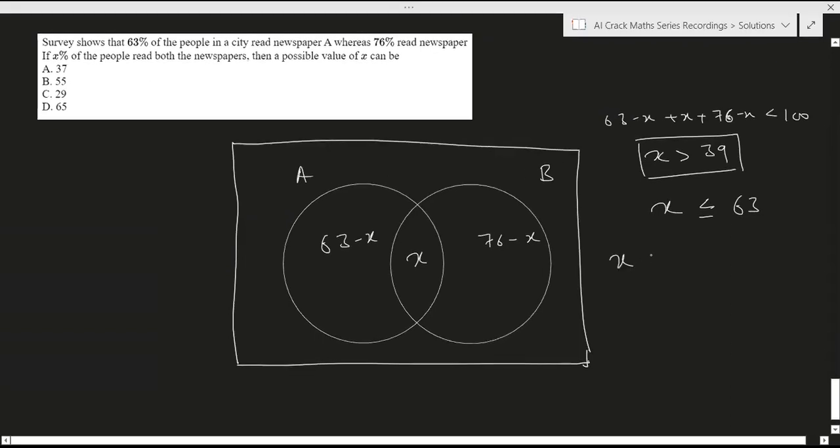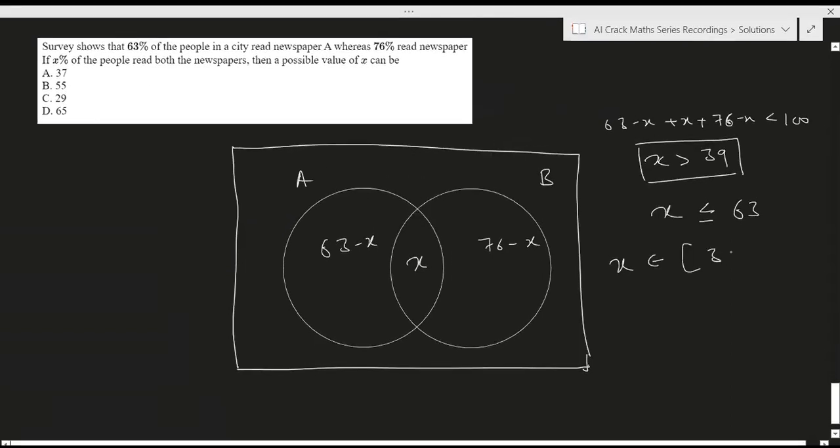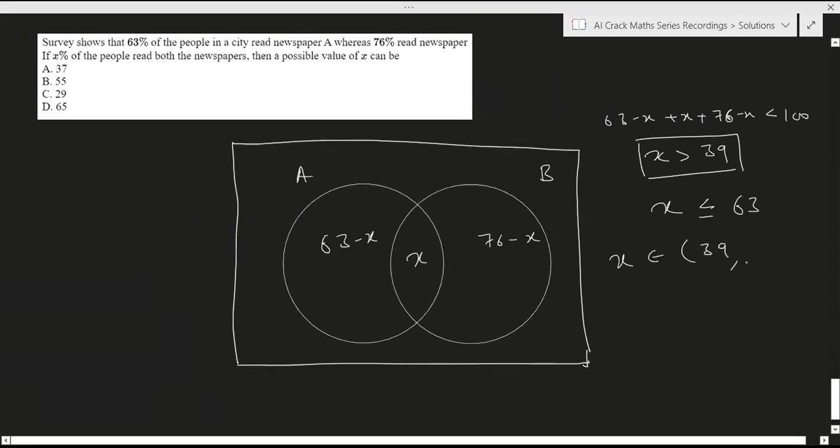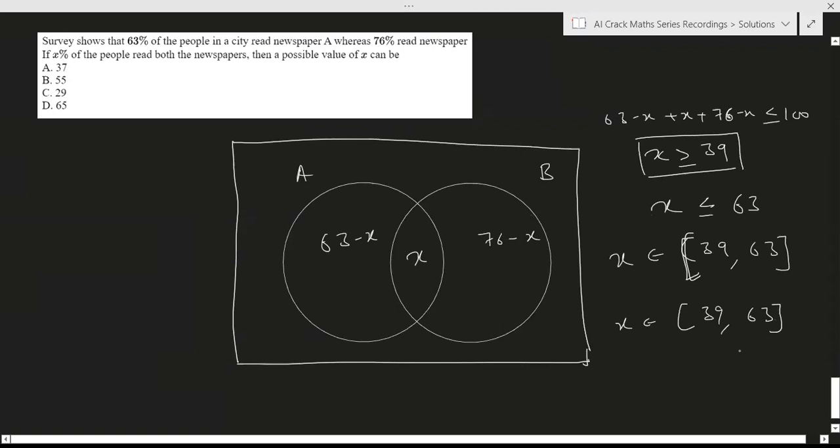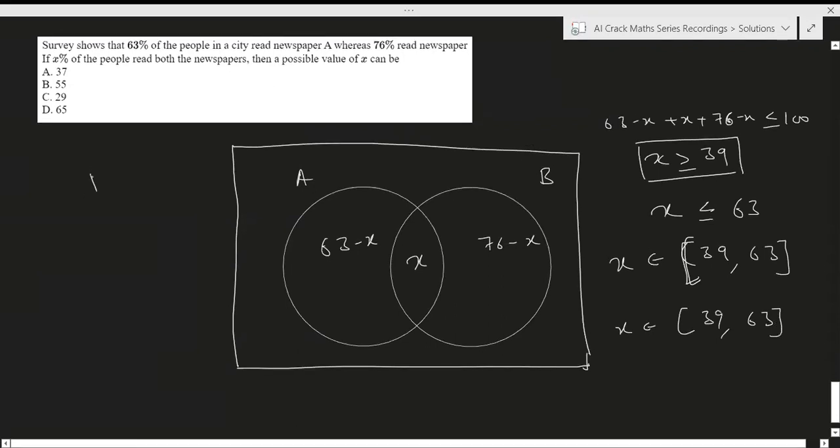So we get a range of X belongs to 39 open bracket to 63. But it shouldn't be open bracket actually, it can be 100 as well, right, because it might be possible that there is no value in the universal set, in that case it can be 100. So it should be close bracket here. So X belongs to close bracket 39 to 63 close bracket. So based on that we can see that only B option is correct.